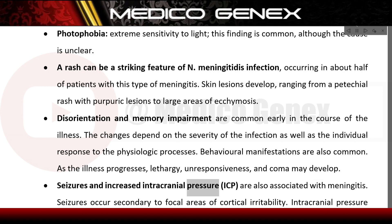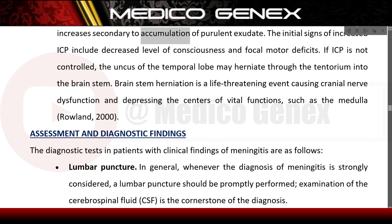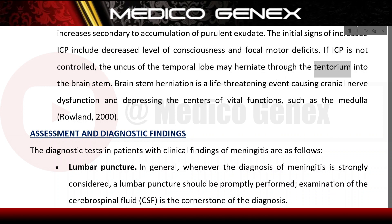Behavioral manifestations are also common. As the illness progresses, lethargy, unresponsiveness, and coma may develop. Seizures and increased intracranial pressure (ICP) are also associated with meningitis; seizures occur secondary to focal cortical irritability. ICP increases due to accumulation of purulent exudate; initial signs include decreased level of consciousness and focal motor deficits. If ICP is not controlled, the uncus of the temporal lobe may herniate through the tentorium into the brain stem, causing cranial nerve dysfunction and depressing vital centers such as the medulla.